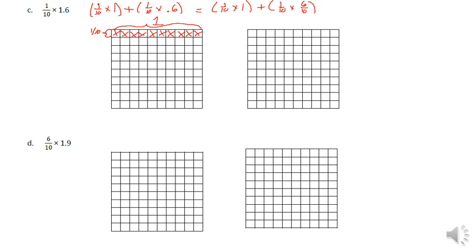So one tenth times one is going to equal ten hundredths, because that's ten out of a hundred — ten times ten, there are a hundred blocks in this whole unit. For the second part, we go with six tenths times one tenth, and we end up with six hundredths. Adding these two together, we end up with sixteen hundredths.